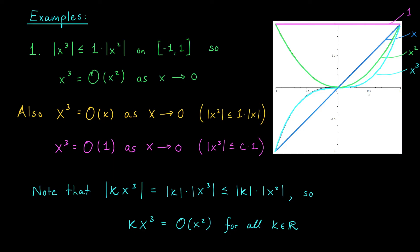Here's a small but important observation. If X cubed is equal to big O of X squared, then K times X cubed is also going to be big O of X squared, where K can be any constant you like. Going back to the definition: if I multiply X cubed by K, then in absolute value this equals the absolute value of K times the absolute value of X cubed. Near X equals zero, that term is bounded by X squared in absolute value. So K X cubed in absolute value is bounded by this constant times the absolute value of X squared, and we conclude that K X cubed is also equal to big O of X squared.